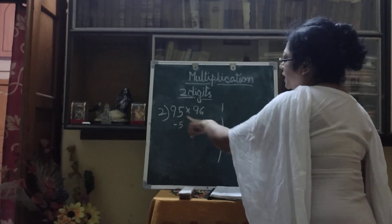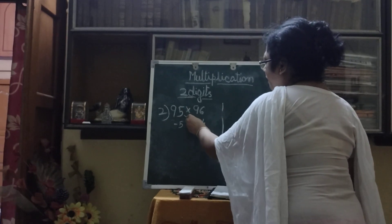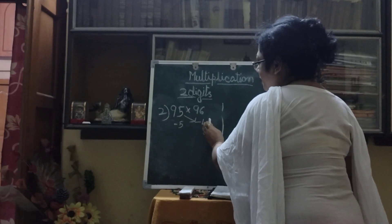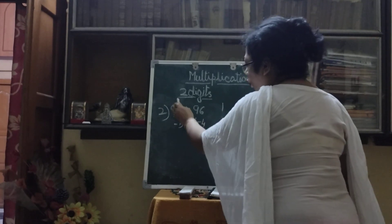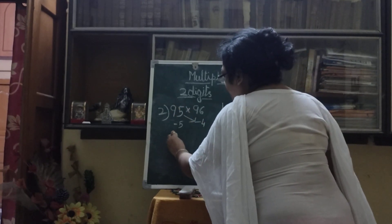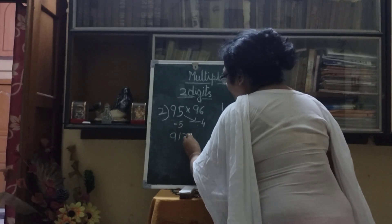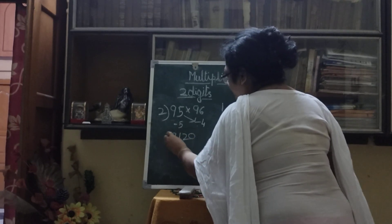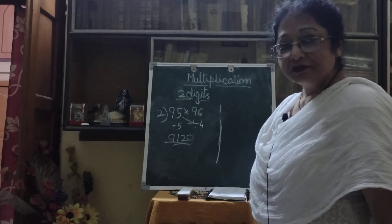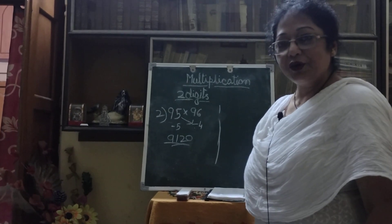So here I am subtracting 95 minus 4, that is 91. And 5 multiplied by 4 is 20. So the answer is 9120. Within a second you can do it.